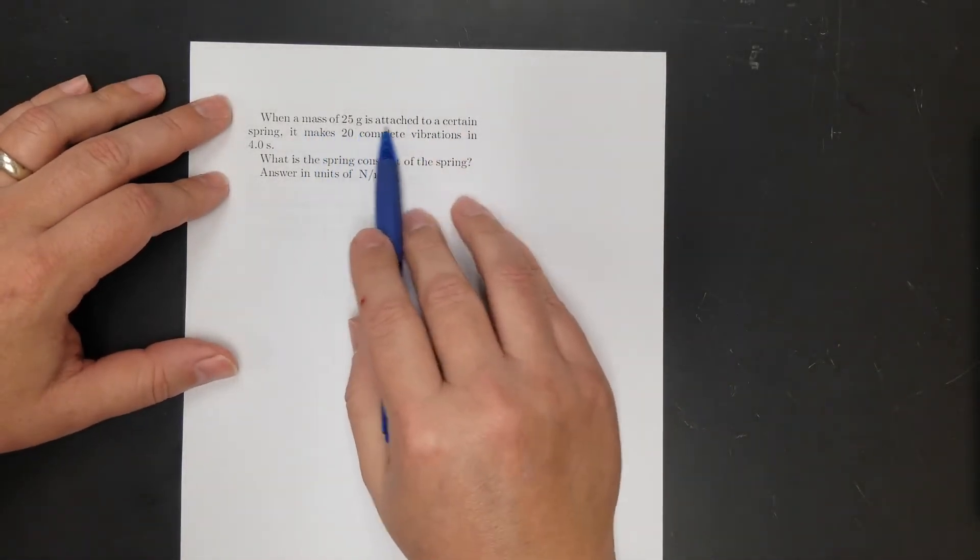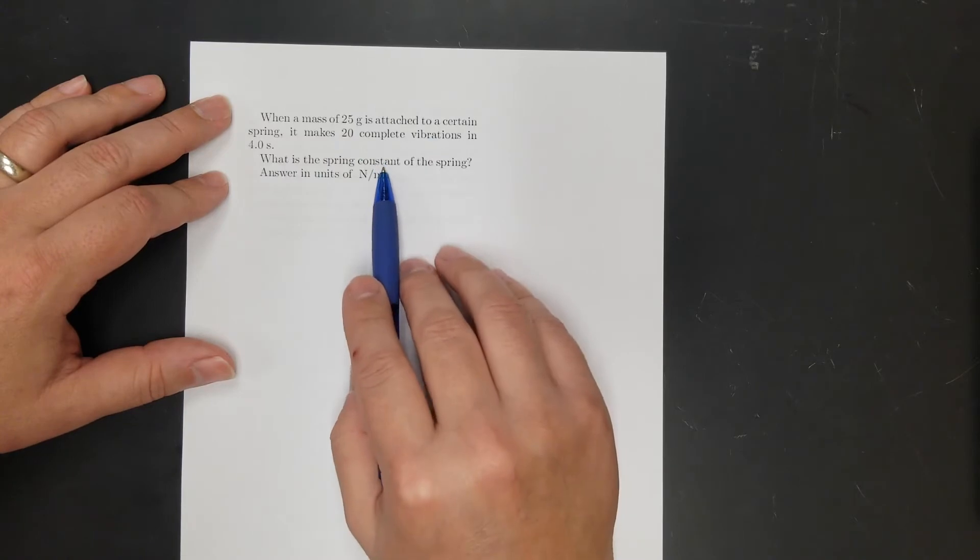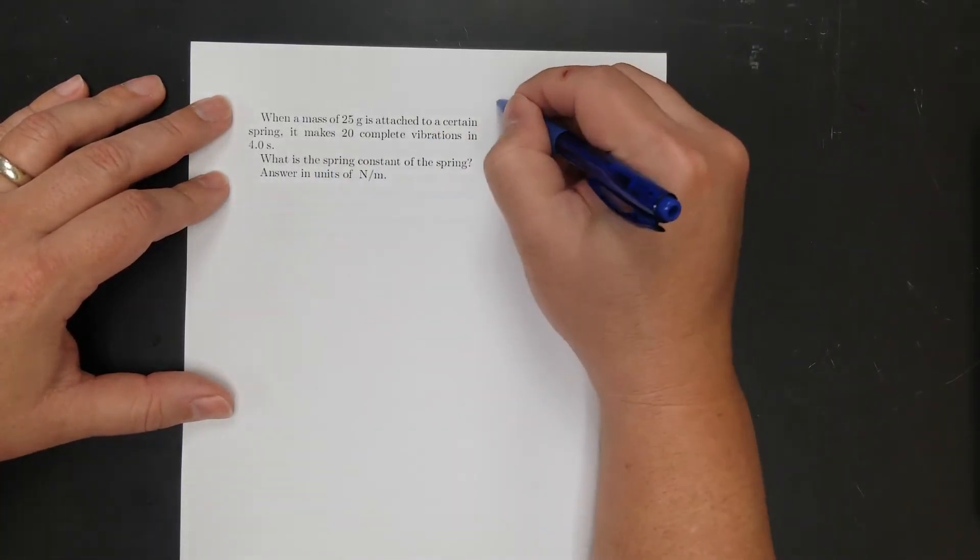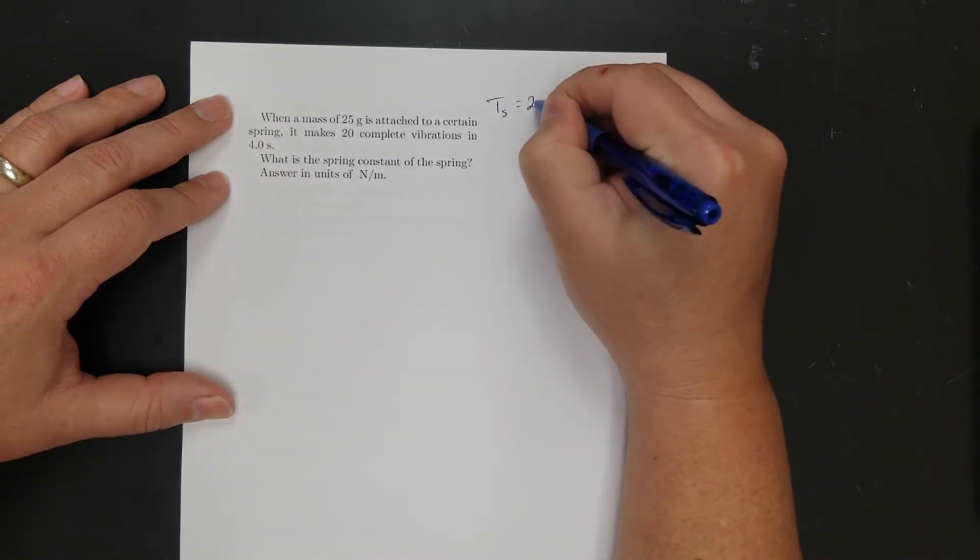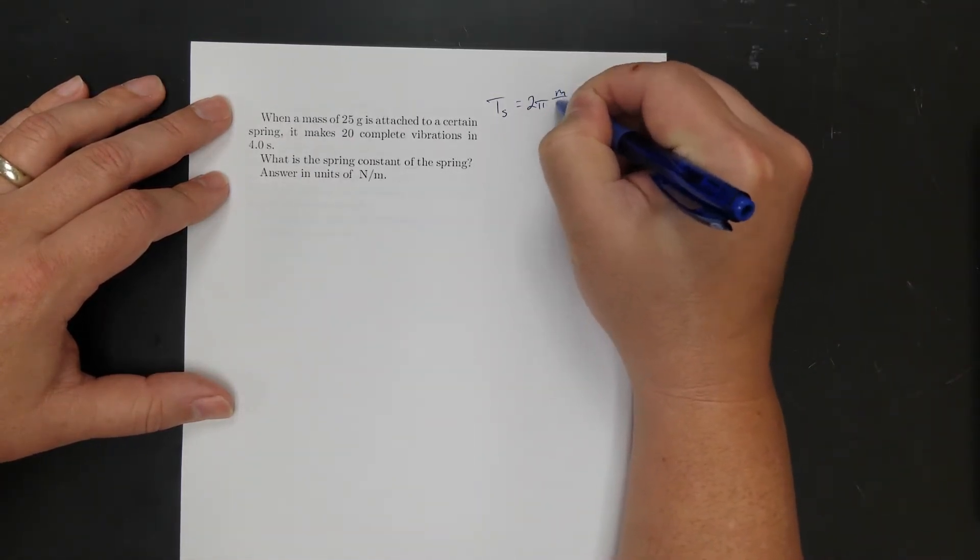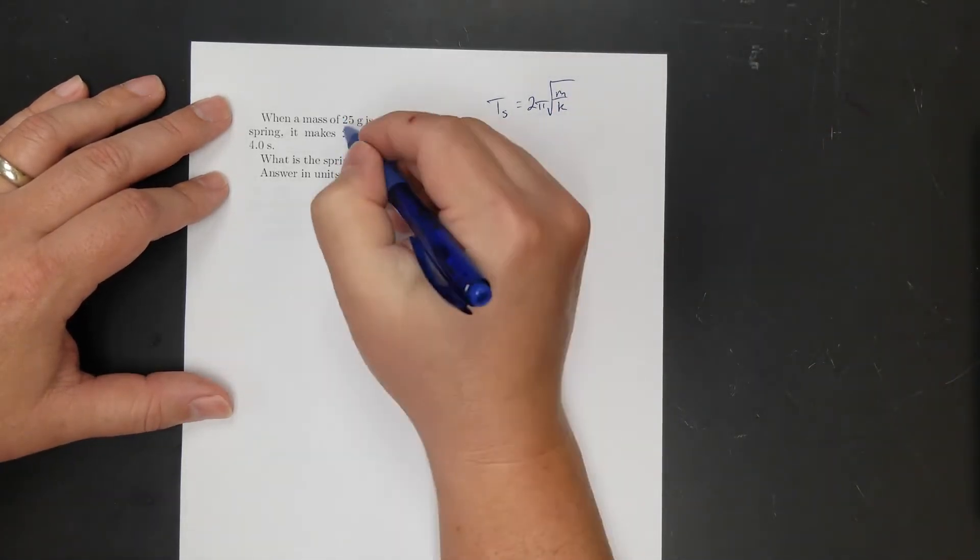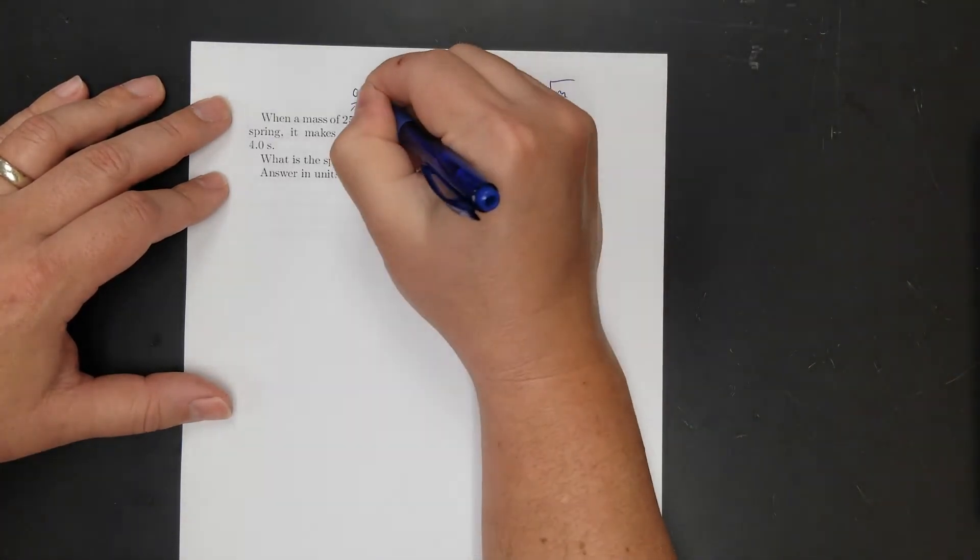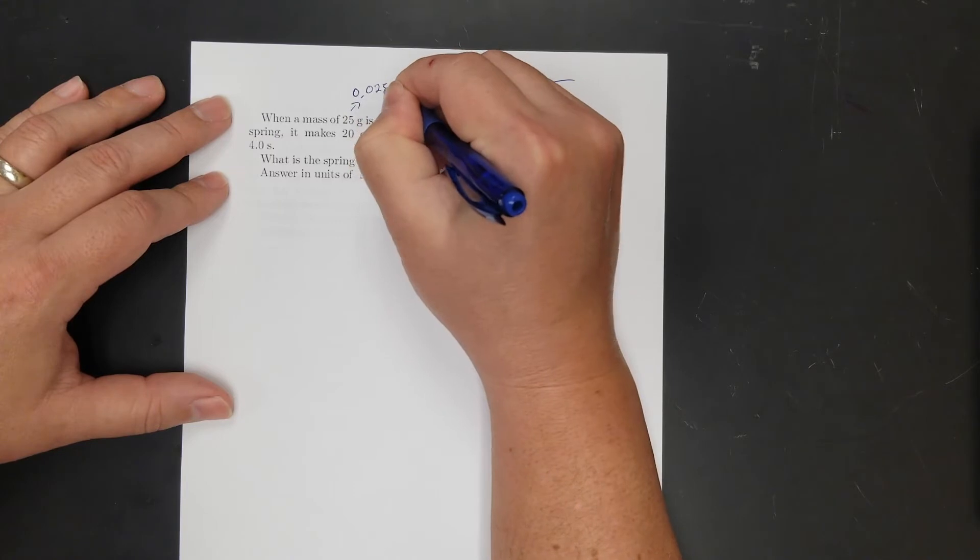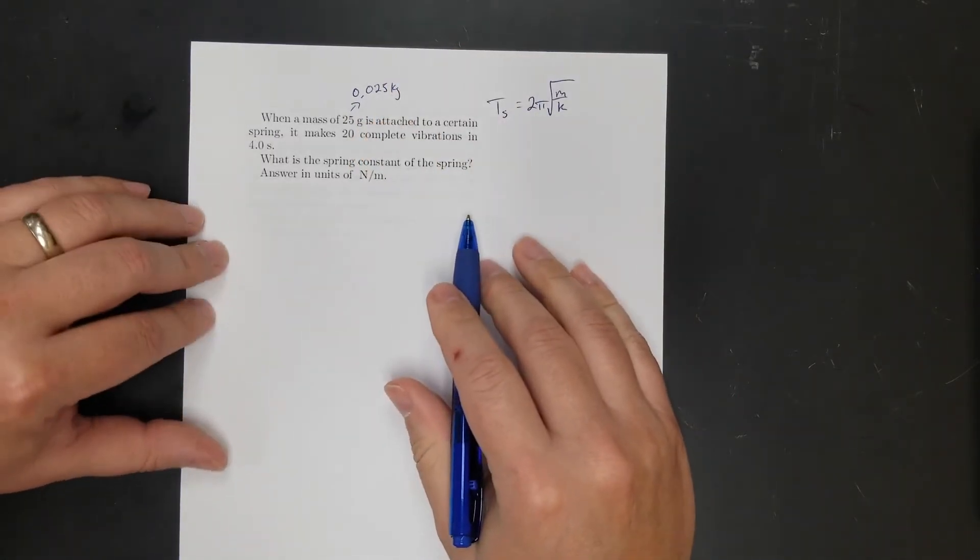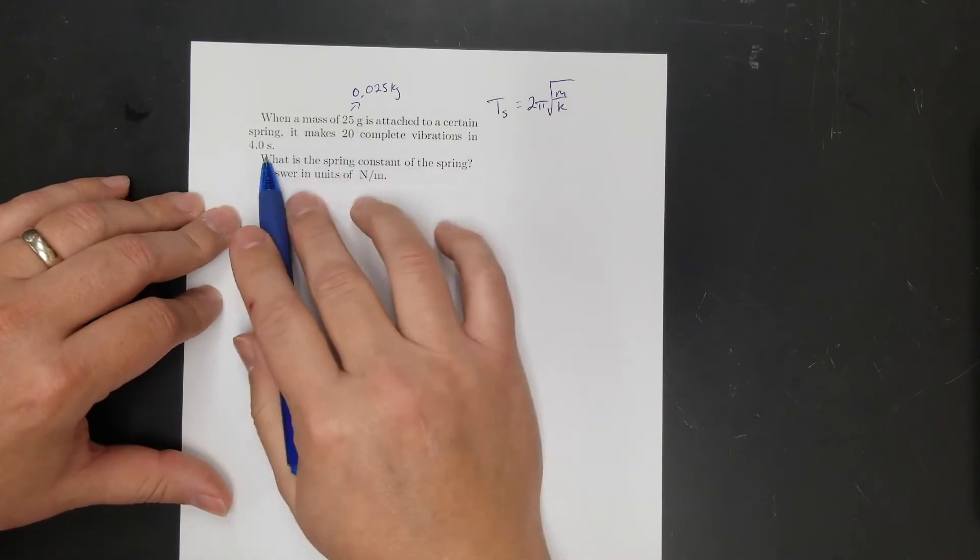Okay, next problem. Mass of 25 grams attached to a certain spring. It makes 20 vibrations in four seconds. What's the spring constant? Okay, so I'm going to write. I'm trying to figure out spring constant. So I need the period of the mass on a spring, which is 2π square root of m over k. And I see grams. So immediately I'm going to write this down and say that I'm converting 0.25 grams as 0.025 kilograms. I'm going to do that right away so I don't forget it.